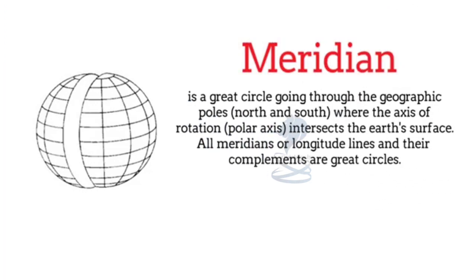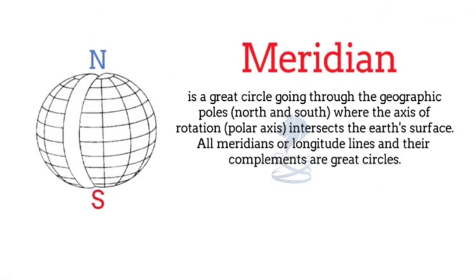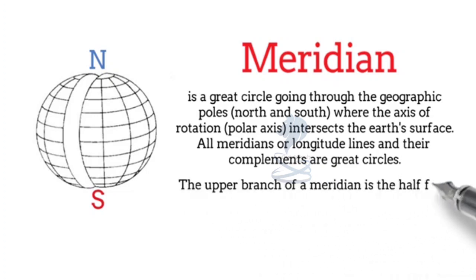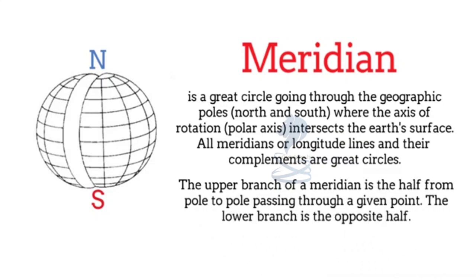A meridian is a great circle going through the geographical poles — north and south — where the axis of rotation intersects the earth's surface. All meridian or longitudinal lines and their complements are great circles. The upper branch of a meridian is the half from pole to pole passing through a given point, and the lower branch is the opposite half.